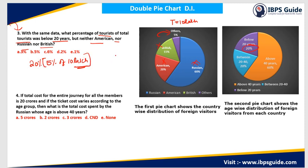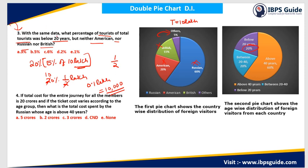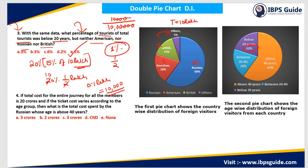5% of 10 lakh: 10% is 1 lakh, so 5% is 0.5 lakh. Then 20% of 0.5 lakh: 10% is 0.05 lakh, so 20% is 0.1 lakh, which equals 10,000. So the total number of visitors who are neither American nor Russian nor British and are below 20 years of age is 10,000. They are asking the percentage with respect to the total tourists: 10,000 divided by 10 lakh is 1 by 100, which equals 1%. The answer is Option E — 1%.